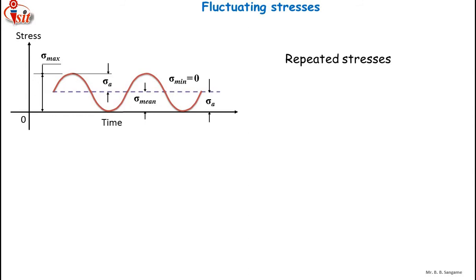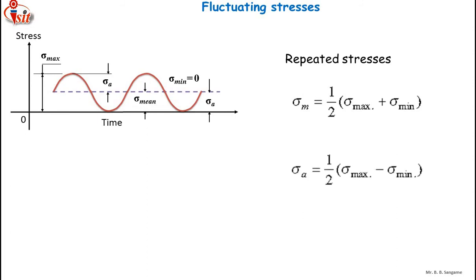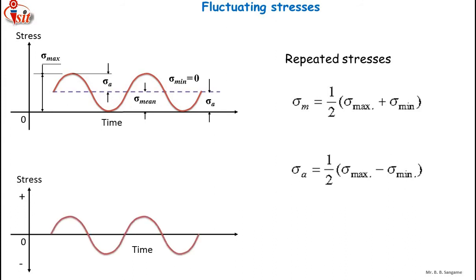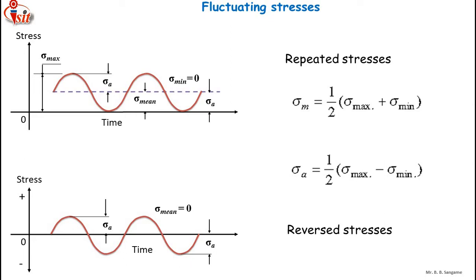Similarly, the reversed stress varies in a sinusoidal manner with respect to time but has zero mean stress. In this case, half the cycle consists of tensile stress and half consists of compressive stress. The positive half represents tensile stress and the negative half represents compressive stress. This is how reversed stresses behave.